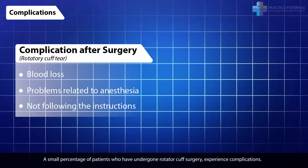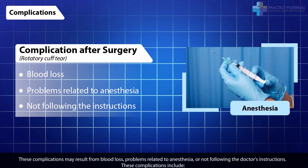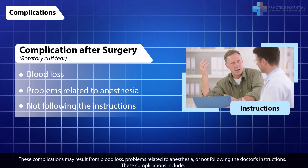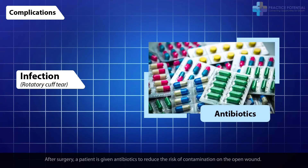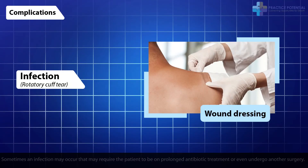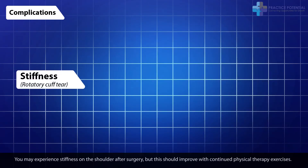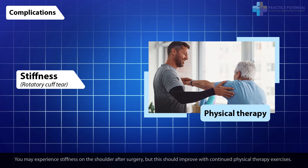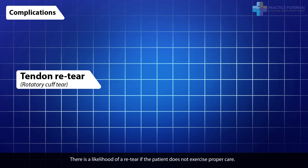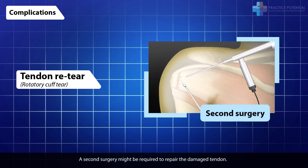Complications. A small percentage of patients who have undergone rotator cuff surgery experience complications. These complications may result from blood loss, problems related to anesthesia, or not following the doctor's instructions. Complications include infection — after surgery, a patient is given antibiotics to reduce the risk of contamination on the open wound; sometimes an infection may occur requiring prolonged antibiotic treatment or even another surgery, so it is advisable to keep the wound clean and take medication as prescribed. Stiffness may occur on the shoulder after surgery but should improve with continued physical therapy. There is also a likelihood of a tendon re-tear if the patient does not exercise proper care, particularly if engaging in vigorous activities before the shoulder is fully healed, in which case a second surgery might be required.